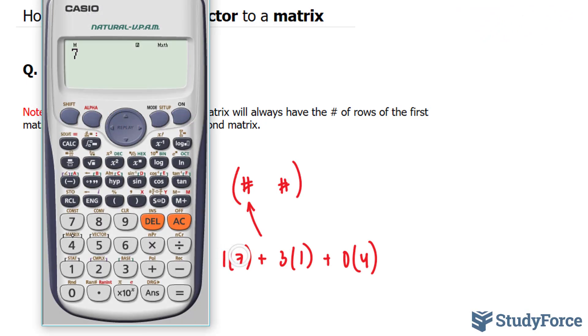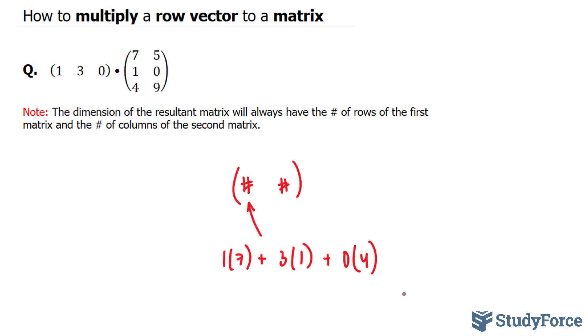So we have 7, 1 times 7 is 7, plus 3 plus 0, and the answer is 10.